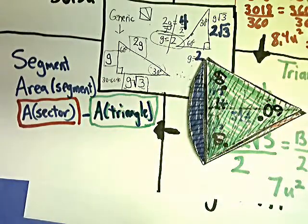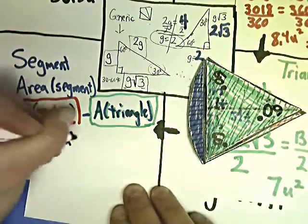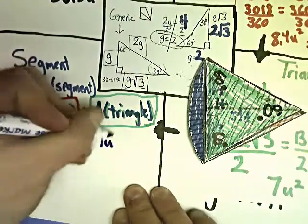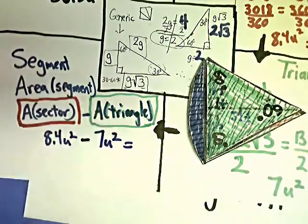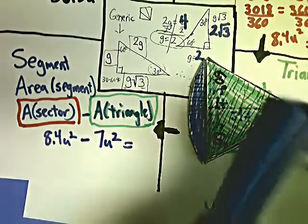So I do area of sector as 8.4 units squared minus the area of the triangle, which is 7 units squared. So I know that 8 minus 7 is just 1, so it should be 1.4, but I'll check myself anyway.